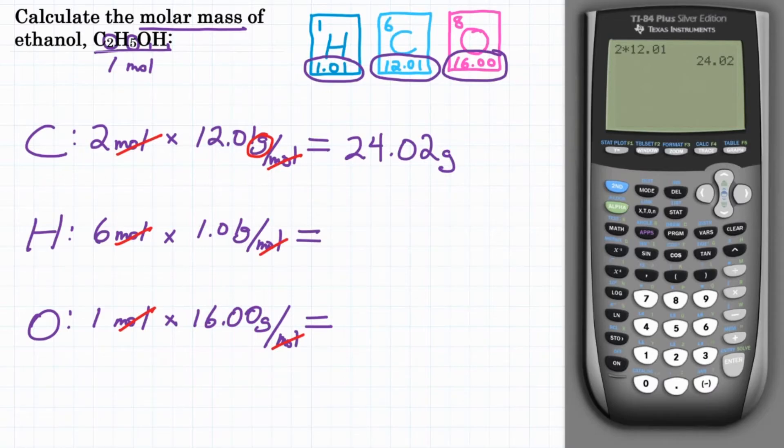Now we've got our second one. So for hydrogen, we're starting with 6. We're going to multiply by 1.01, and we get 6.06, so 6.06 grams of hydrogen.